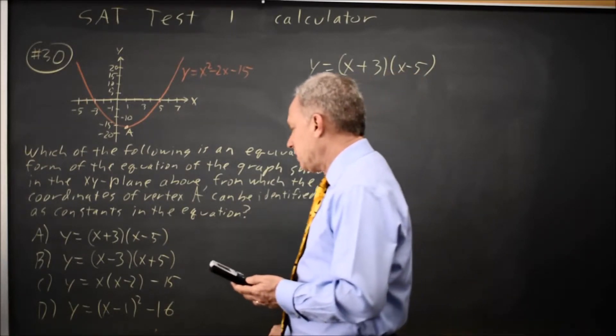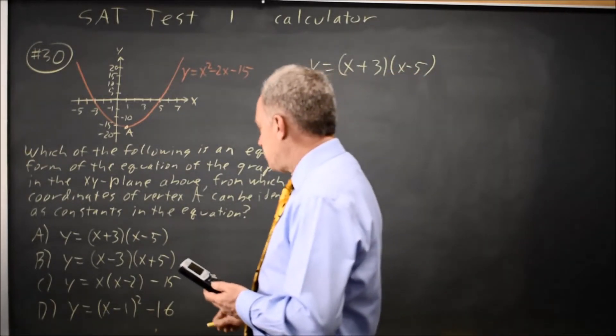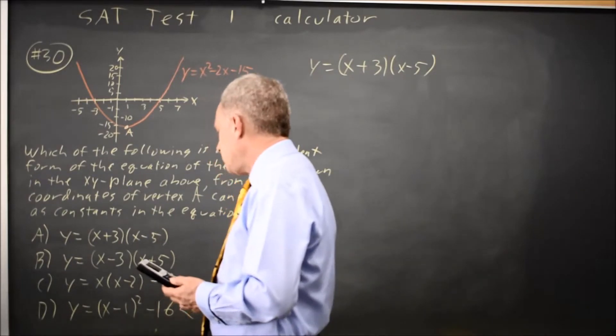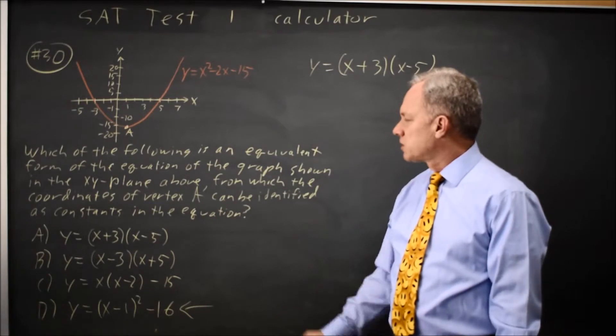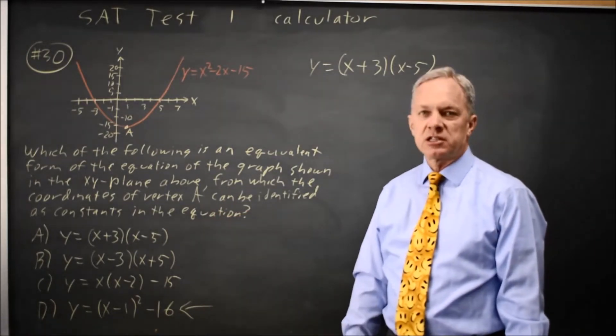Y equals negative 16. The only equation that has a negative 16 in it would be choice D. So D is the equivalent form in which the coordinates of the vertex can be identified as constants.